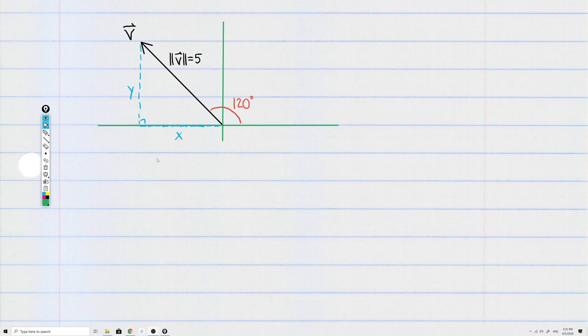In this video we're going to take the vector that you see I've called V. The magnitude of this vector is 5, meaning the length of the arrow is 5, and the angle that that vector makes is 120 degrees.